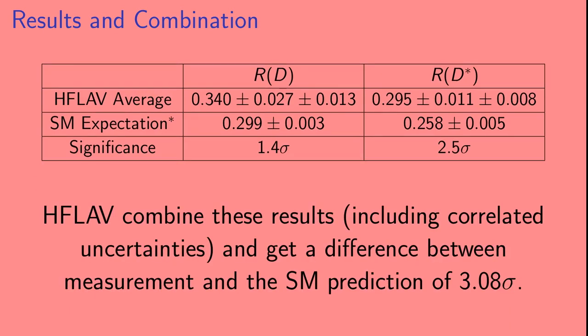The heavy flavor averaging group combine these results, including correlated uncertainties between the different experiments and between R(D) and R(D*). And they get a difference between measurement and the standard model prediction of the combined result of 3.08 sigma.